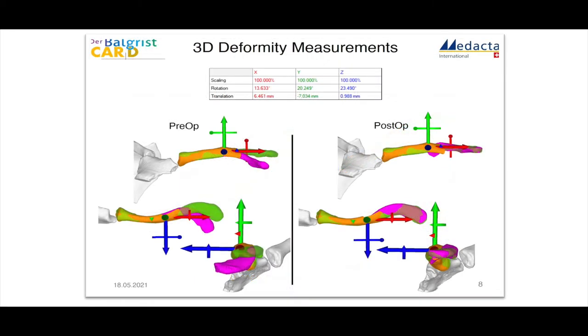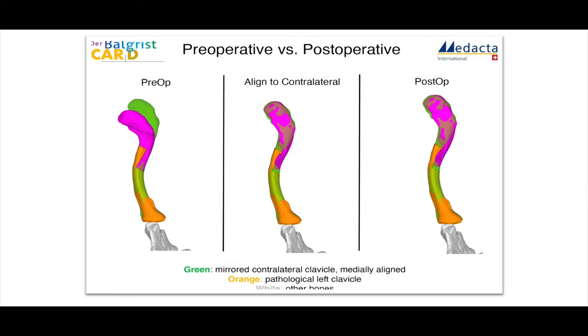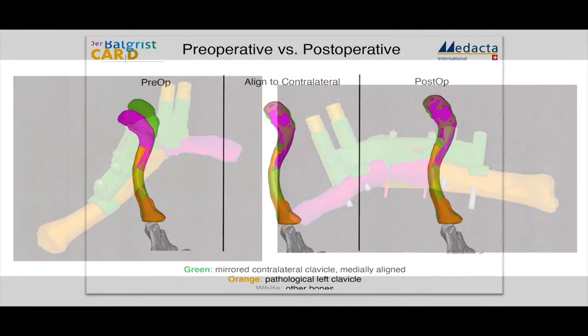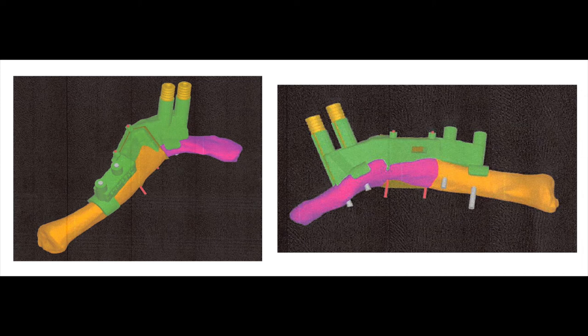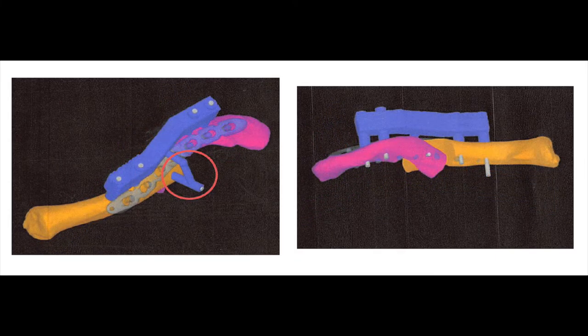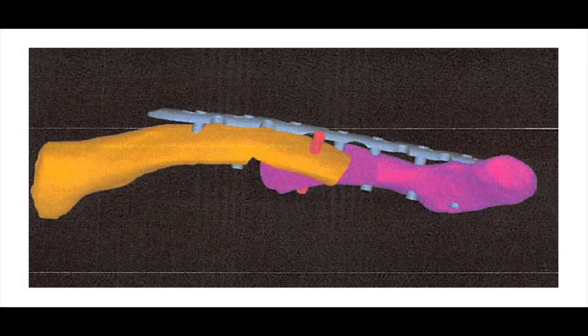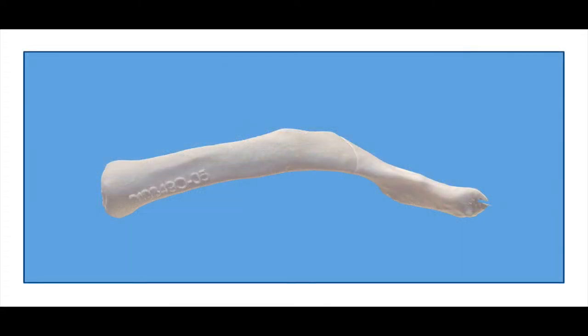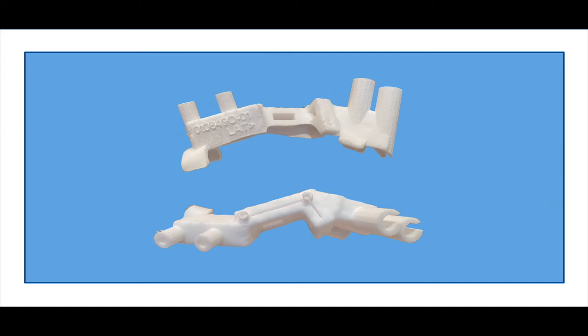A calculation was then made in three orthogonal planes as to where the most appropriate position for an osteotomy would be made. A virtual osteotomy jig was then created, which would be held in position by Steinmann pins to allow for a step osteotomy. The pins would then be corrected in position and held by a reduction jig which had a guide hole for a lag screw. The position for a standard clavicle plate was then recommended, and a 3D model of the malunited clavicle and osteotomy jig were created.